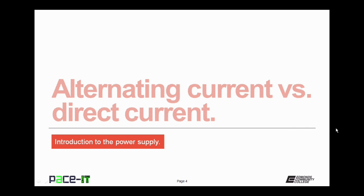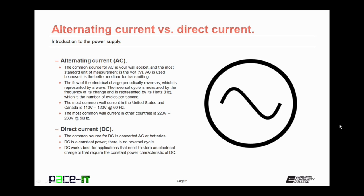We begin by talking about alternating current versus direct current. Let's start with alternating current, AC. The common source for AC is your wall socket, and the most standard unit of measure of AC is in volts. We use alternating current because it's a better medium for transmitting power, especially over distance.